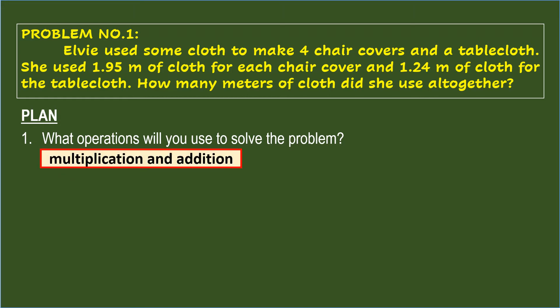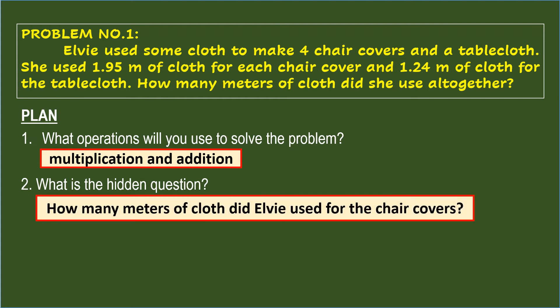Therefore, the operations are multiplication and addition. The next question under the plan is: What is the hidden question? A hidden question is an implied question that needs to be answered before getting the final answer. Going back to the problem, to get the total meters of cloth used altogether, you need to first get the total meters used for chair covers. So the hidden question is: How many meters of cloth did Elby use for chair covers?